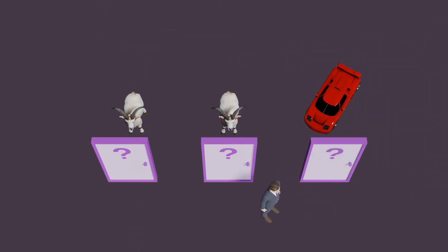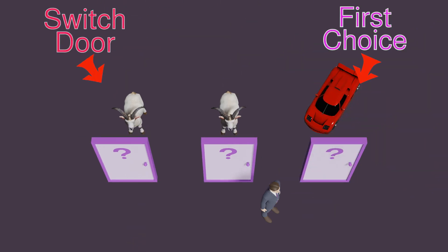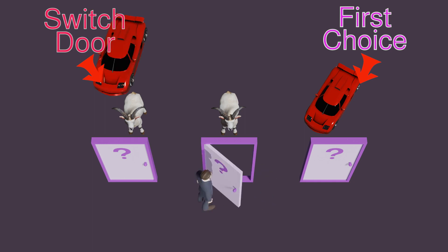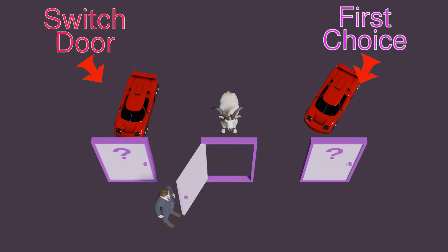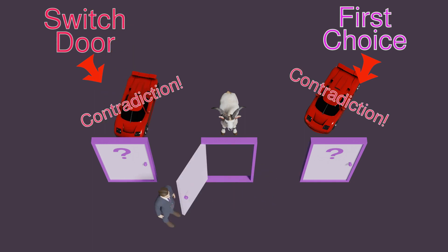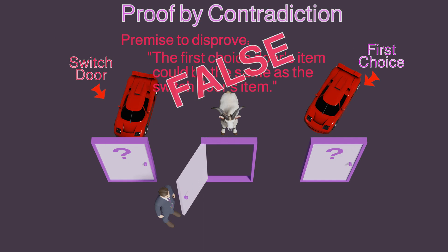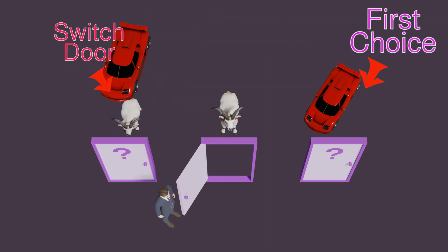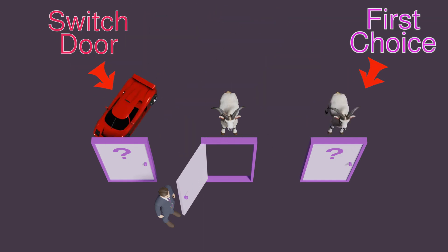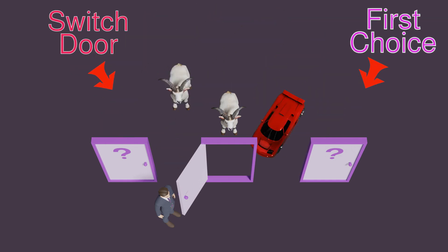On the other hand, if your first choice was a car, and the switch door was also a car, that would obviously contradict the other true premise that there's only one car. Thus, this premise is false — your first choice and the switch door always hide different items.